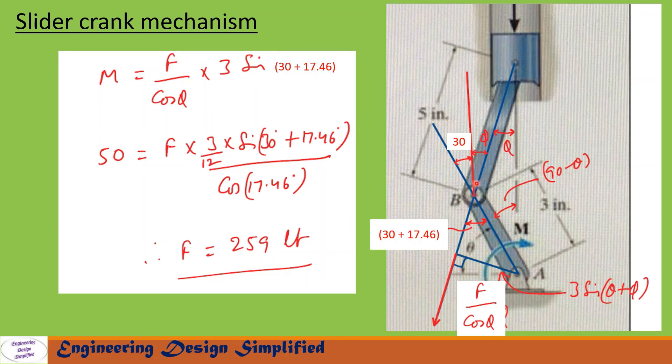This distance can be written as 3 times sine(30 + 17.46 degrees), since this angle is 30 plus 17.46 degrees. M equals F by cos(phi) times 3 times sine(30 + 17.46 degrees).